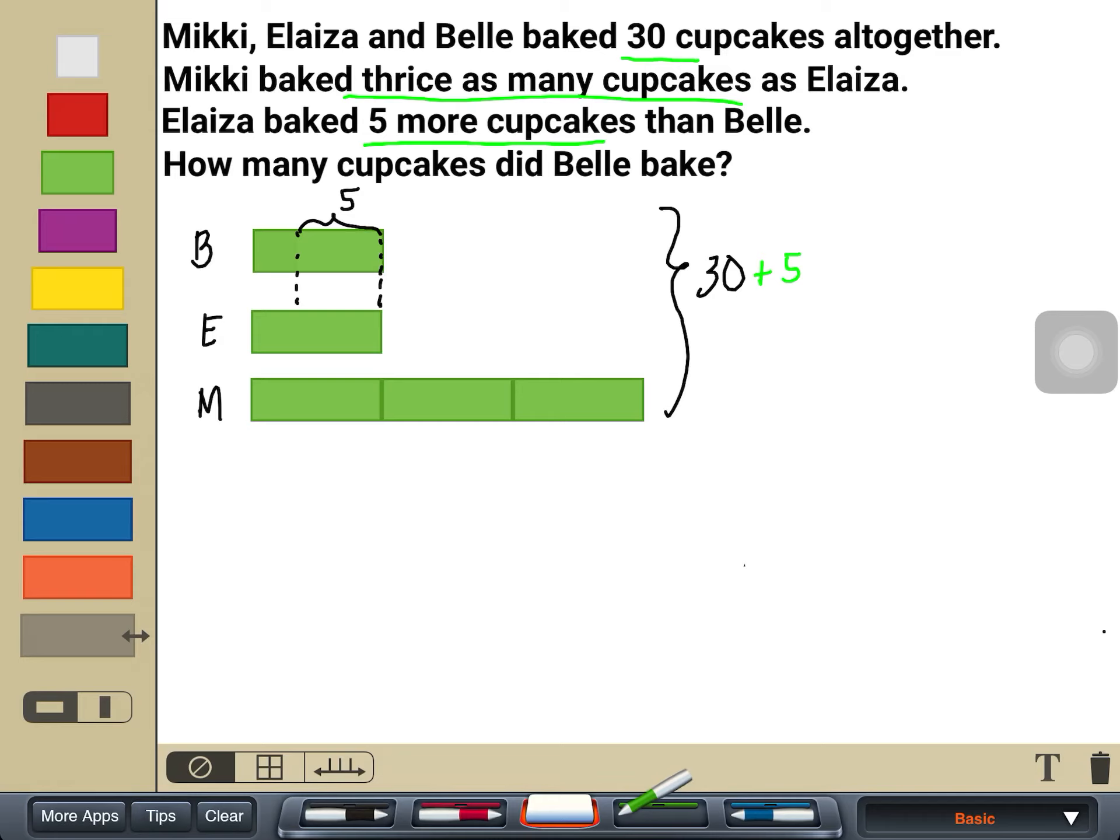That would mean that I would have to add plus 5 here to our total. Now the total, the current total now is 35. So that would be 30 plus 5, 35. And this 35, looking at the model right now, is how many units? It's equal to 5 equal units. So that would now be 5 units is 35.